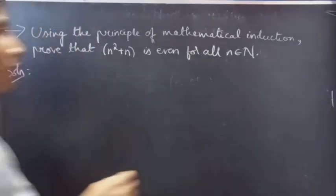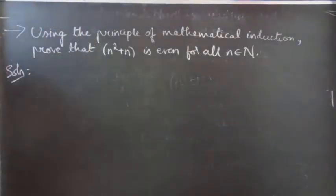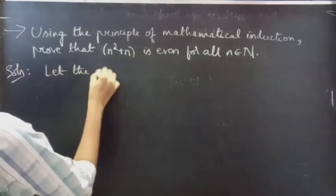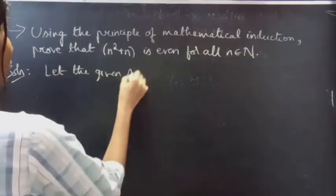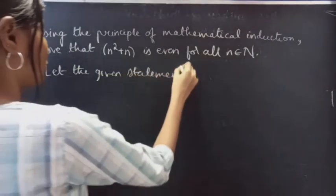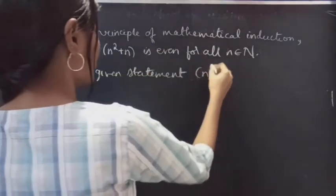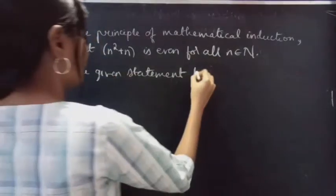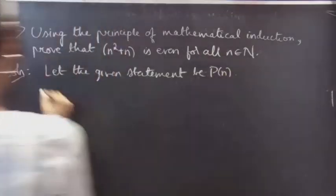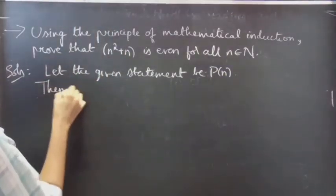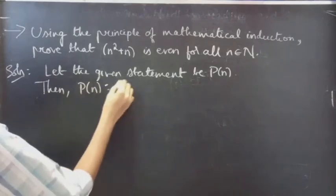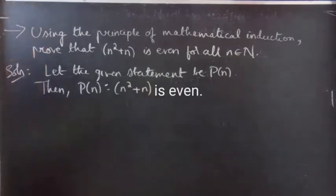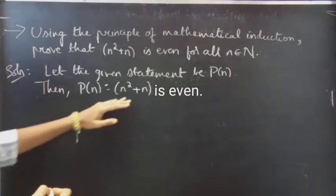Here we are asked to show that n squared plus n is even for all n belonging to natural numbers. Let the given statement P(n) be such that n squared plus n.